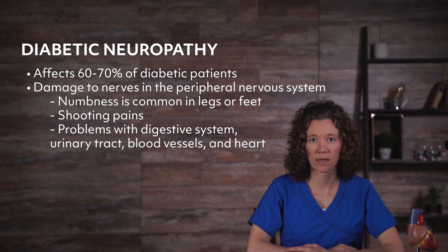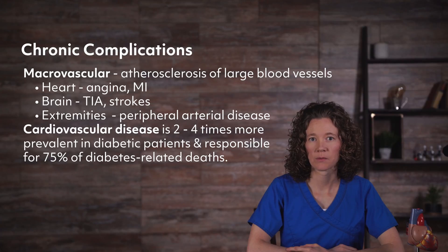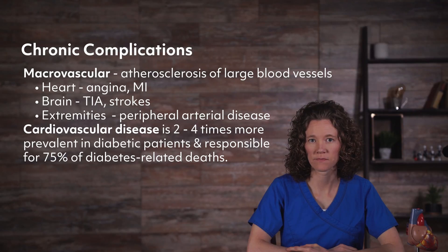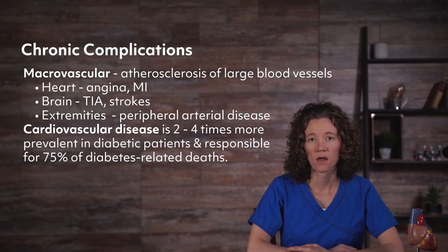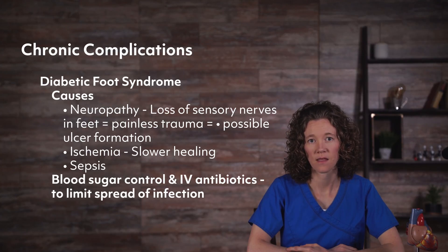Control of blood glucose can prevent or delay many of these complications, but may not reverse them once established. Macrovascular complications involve atherosclerosis of large blood vessels, such as those supplying the heart, brain, and extremities. This can lead to angina, myocardial infarction, transient ischemic attacks, strokes, and peripheral arterial disease. Cardiovascular disease is two to four times more prevalent in diabetic patients and is responsible for approximately 75% of diabetes-related deaths.